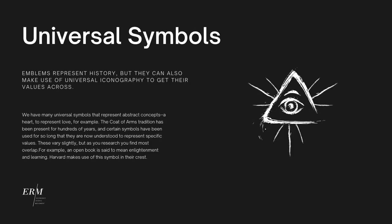Emblems represent history, but also abstract values. You don't have to pick random symbols and hope people understand what you mean. There are certain objects that are universally understood to mean certain things. For example, a heart represents the abstract concept of love. Ancient crests often made use of the same symbols, and historians have recorded what they were said to mean.